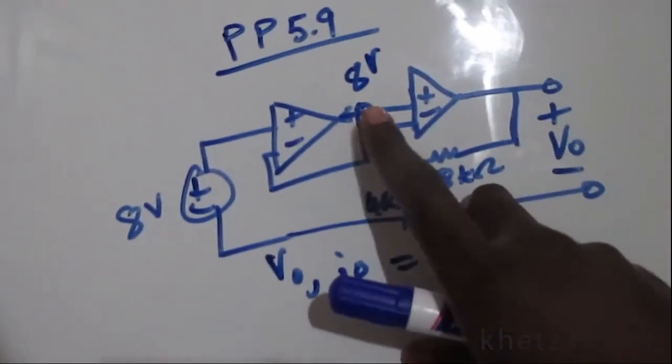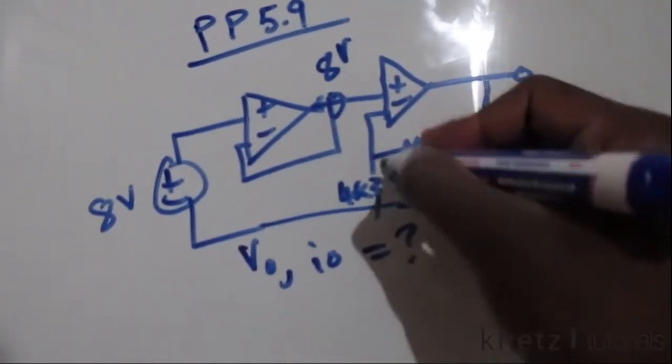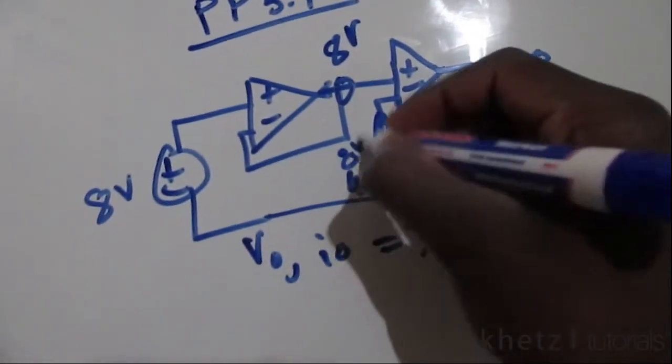Now this is the terminal voltage on the positive side, which means also on the negative side we will have 8 volts.